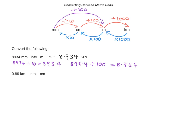Can you see what I've done? I've just combined the zeros. Similarly, if you wanted to go from metres to millimetres, instead of multiplying by 100 and then by 10, you could do it in one step by multiplying by 1,000.